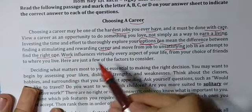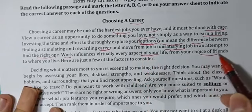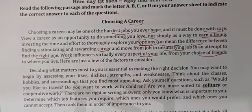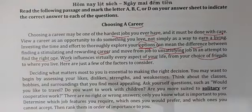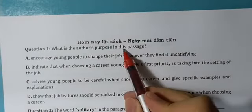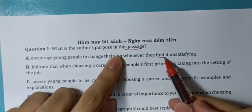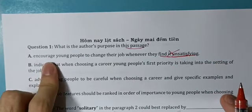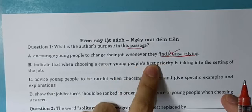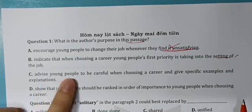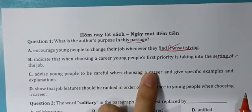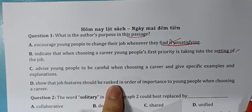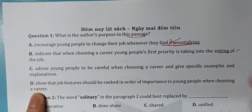Công việc ảnh hưởng đến gần như tất cả các khía cạnh trong đời sống, từ việc lựa chọn bạn bè đến nơi sinh sống. Câu hỏi 1: Mục tiêu của tác giả trong bài đọc là gì? Không phải khuyến khích thay đổi công việc, không phải chỉ ra ưu tiên đặc tính công việc. Mục tiêu của tác giả là khuyên người trẻ hãy cẩn thận khi lựa chọn công việc và đưa ra những ví dụ cụ thể cũng như giải thích. Đáp án là C.